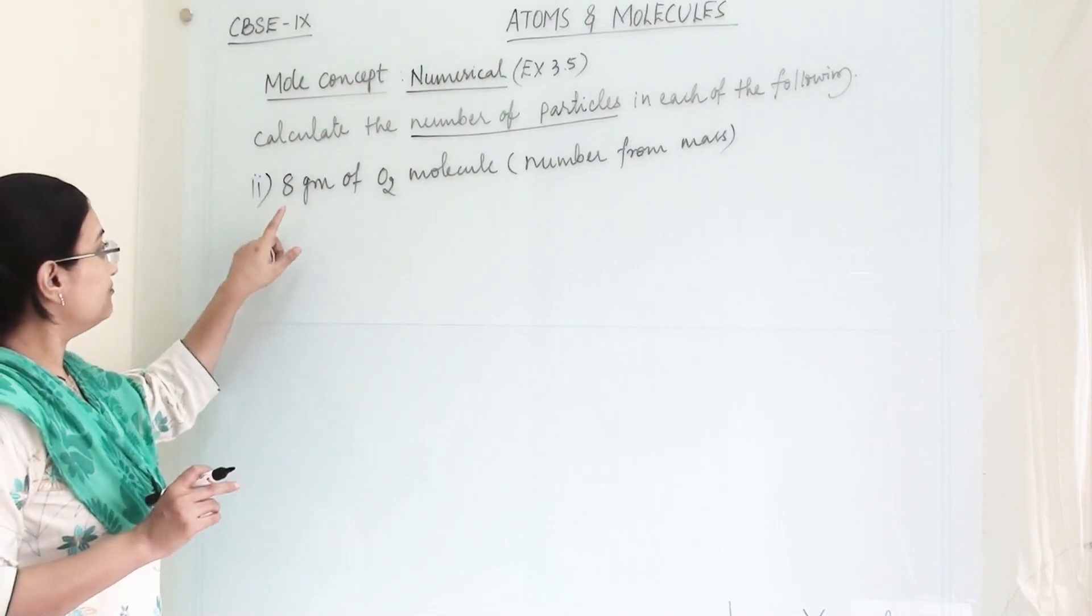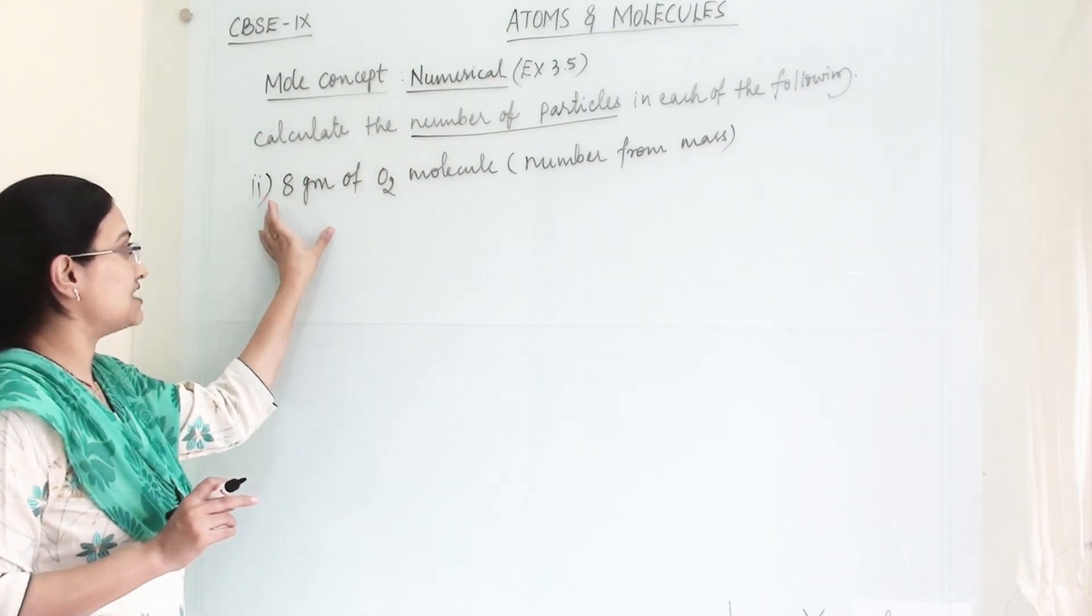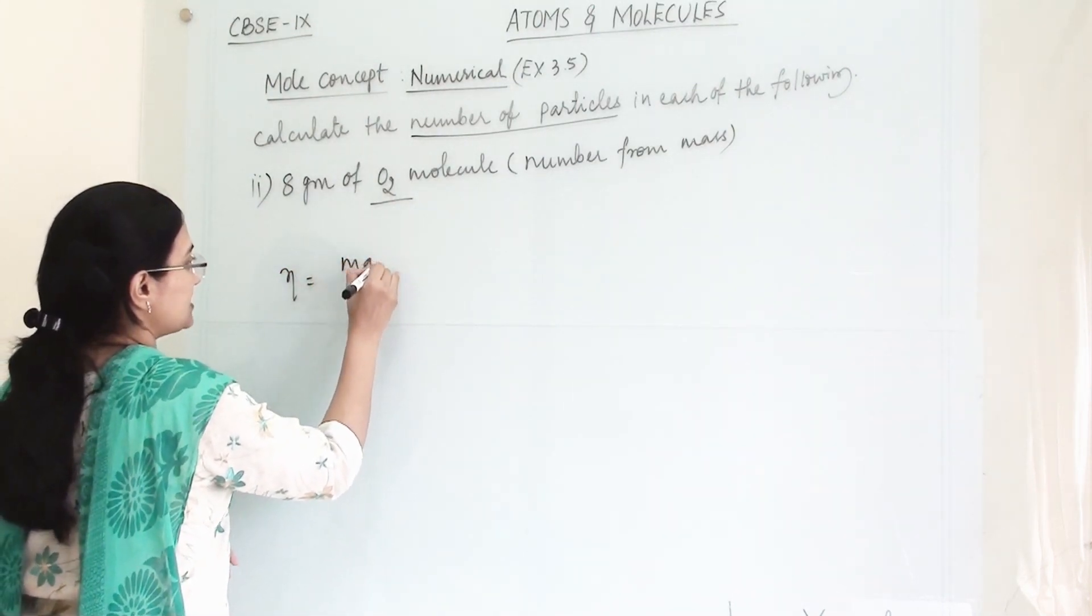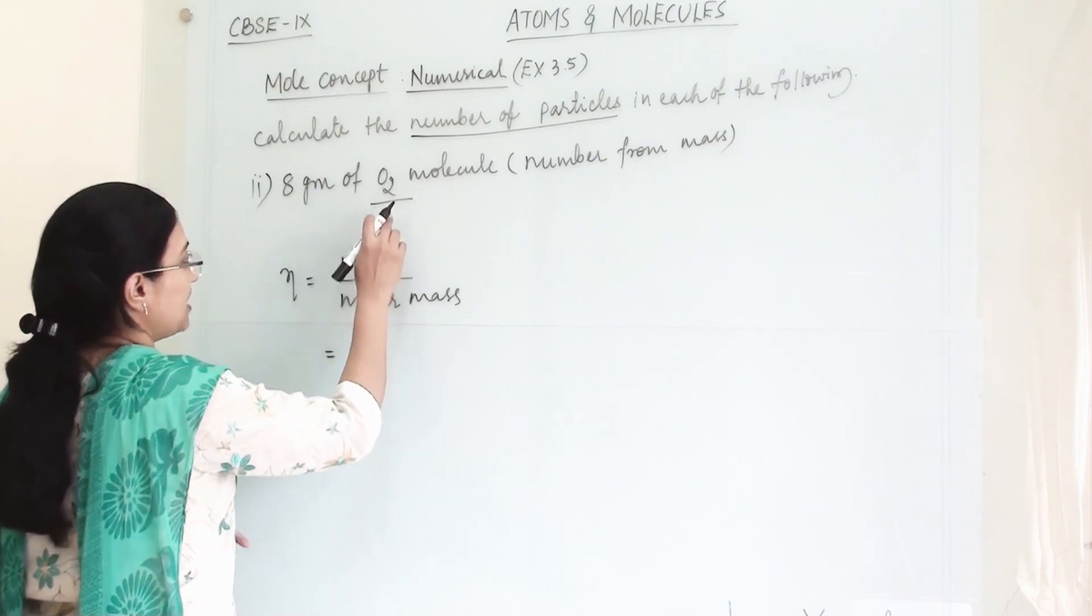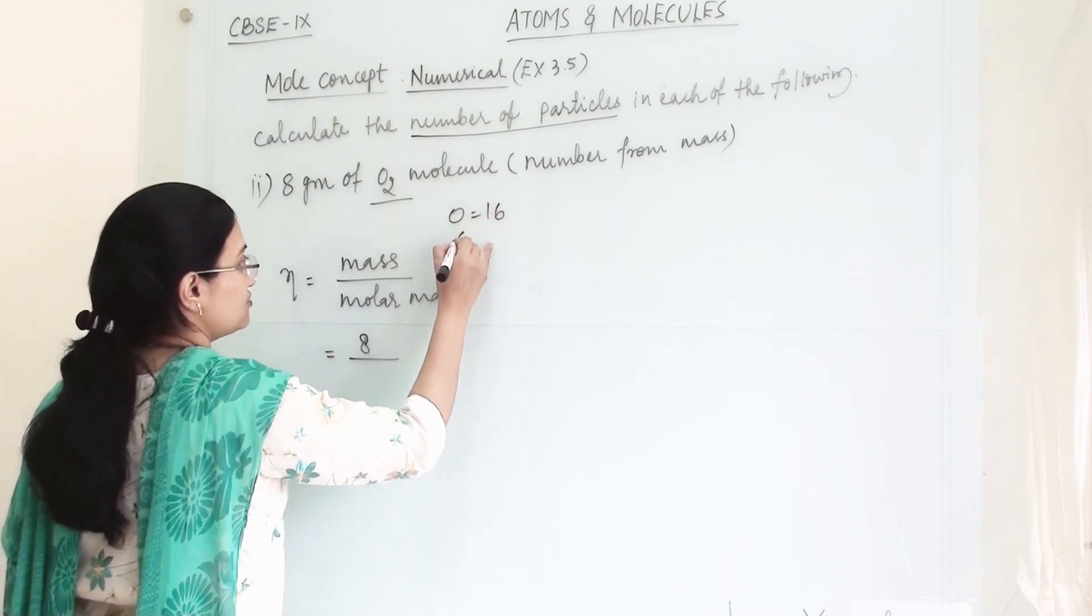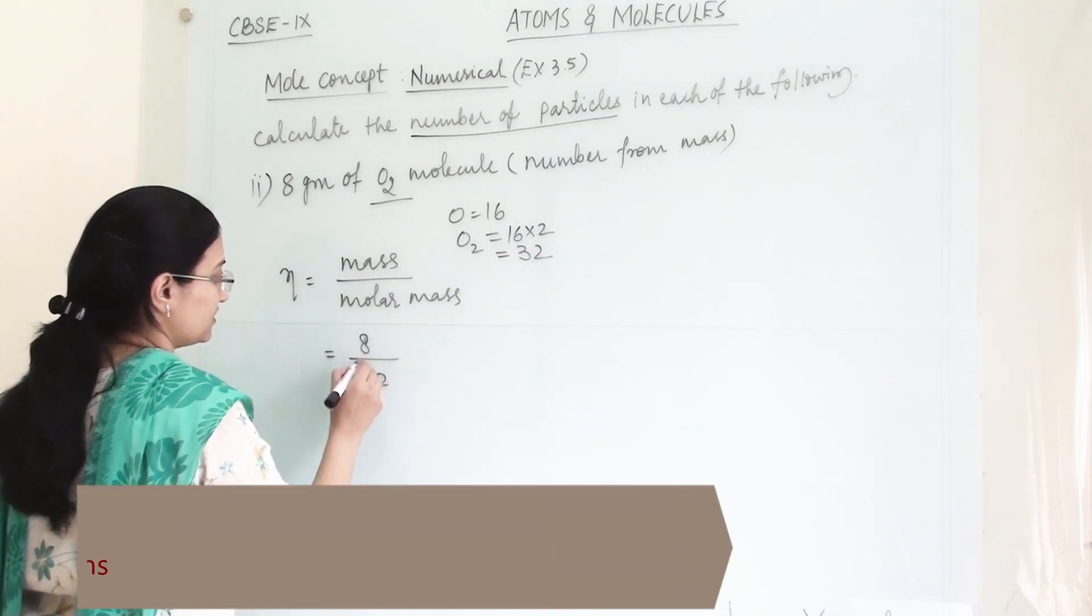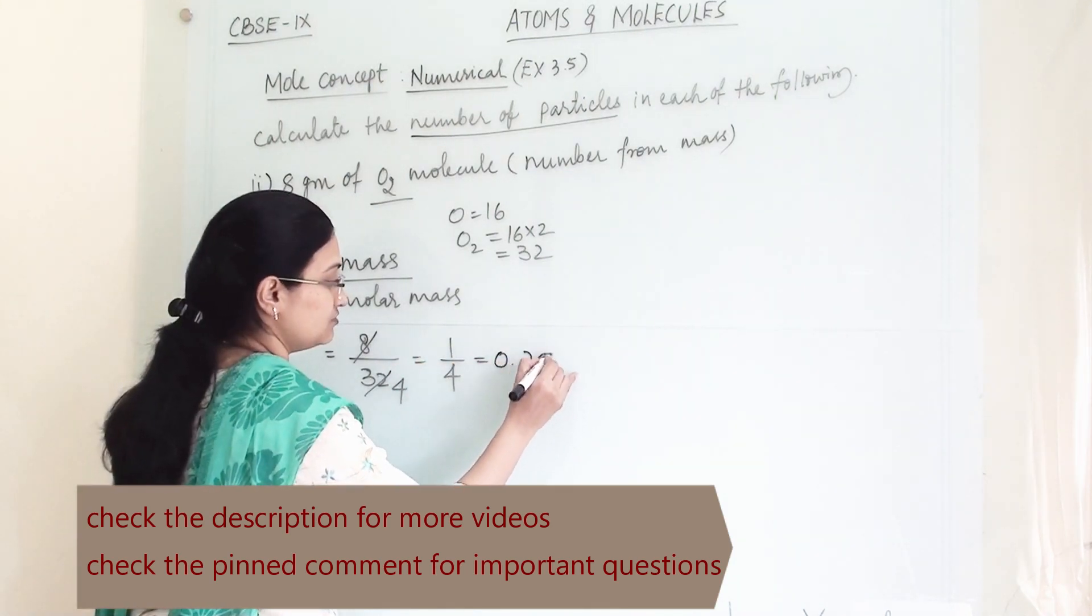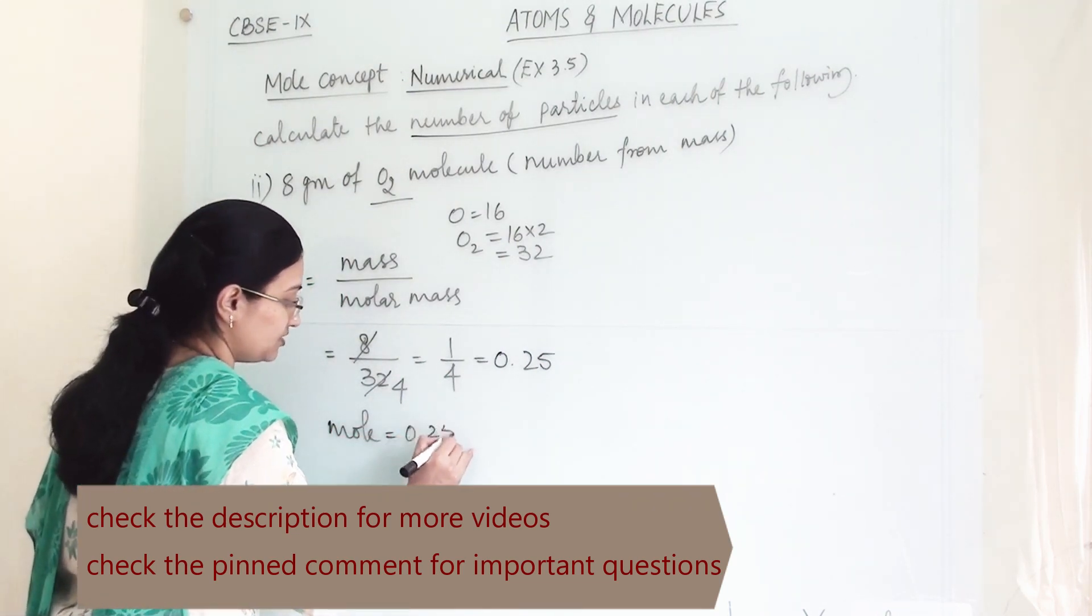In the second numerical we have to find the number of particles from 8 gram of O2 molecule. So this is the mass given for O2 molecule. Now n equals mass divided by molar mass. The mass is 8 gram and molar mass of O2 is 16 × 2, so it is 32. So 8 divided by 32 equals 0.25. So the number of moles is 0.25.